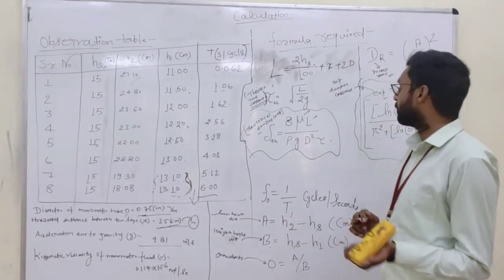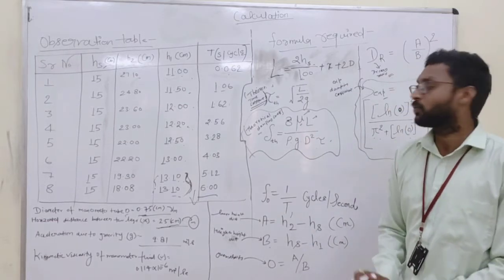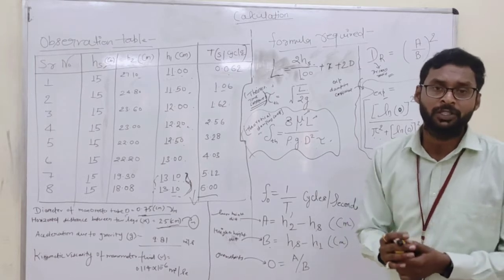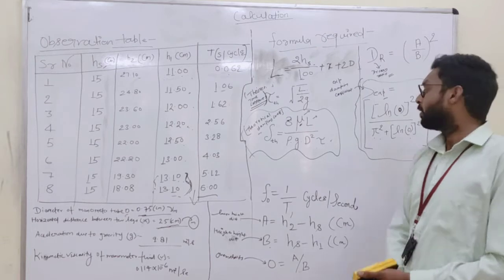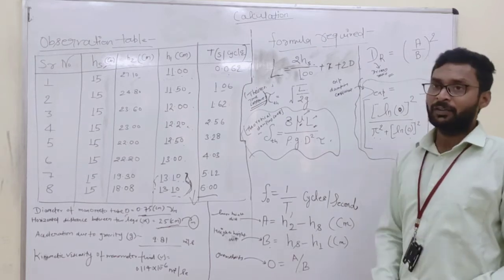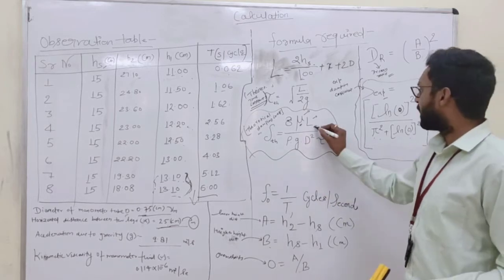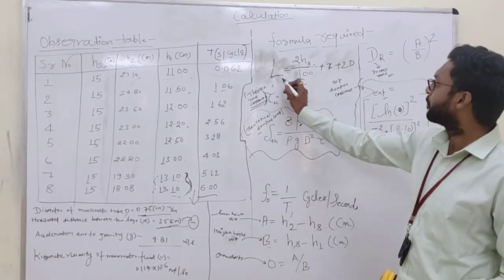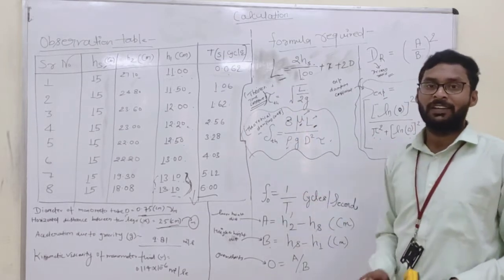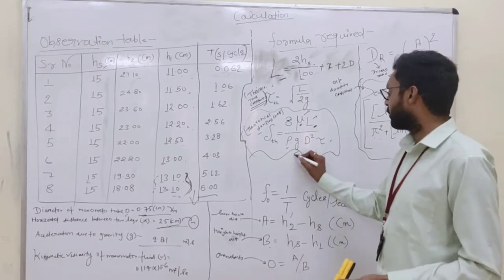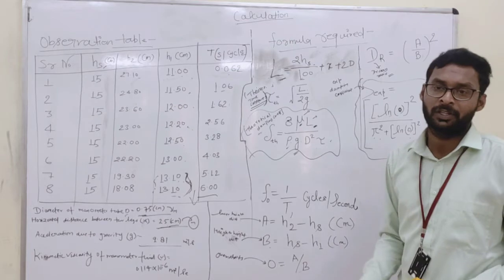The terminologies are: mu, which is the viscosity of the liquid. The liquid we are using here is mercury, so we will note down the mercury viscosity. L is the length of the liquid column. Rho is the liquid density — we will write down the mercury density. G is the gravitational force, that is 9.81 m/s², which is a constant value.